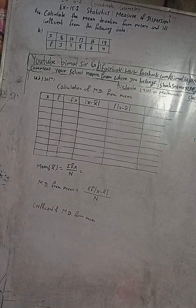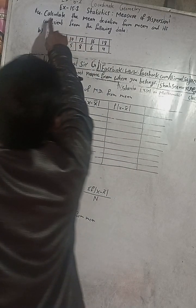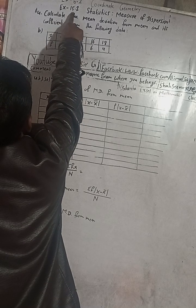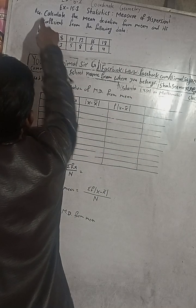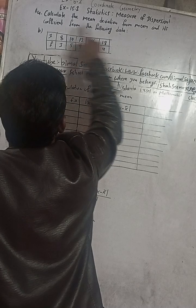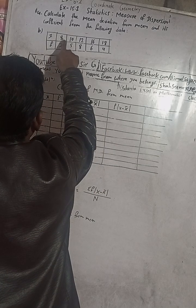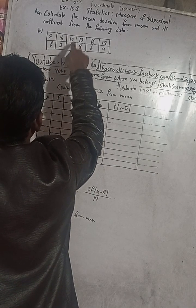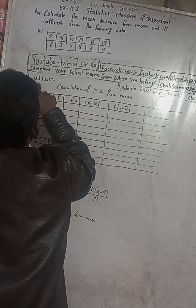This is question number 4B. I will utilize the table from 4A to save time. The question is from Exercise 7.2, Statistics - Measure of Dispersion, Class 9, question 4B: calculate the mean deviations from mean and its coefficient. The data has x values where 8 is repeated three times, 10 is repeated five times, and so on — these are the frequencies.